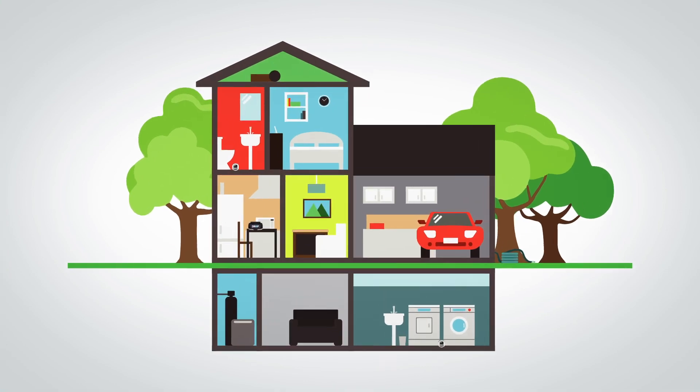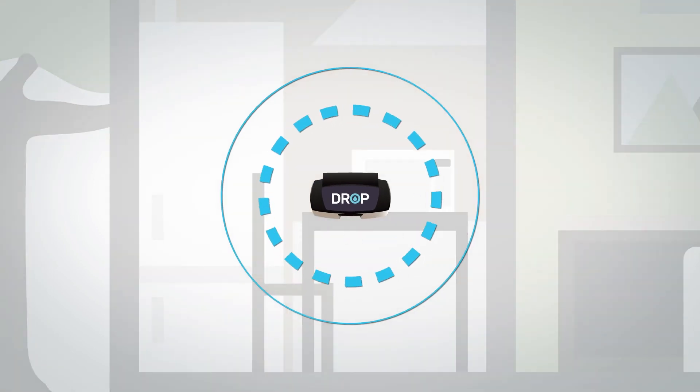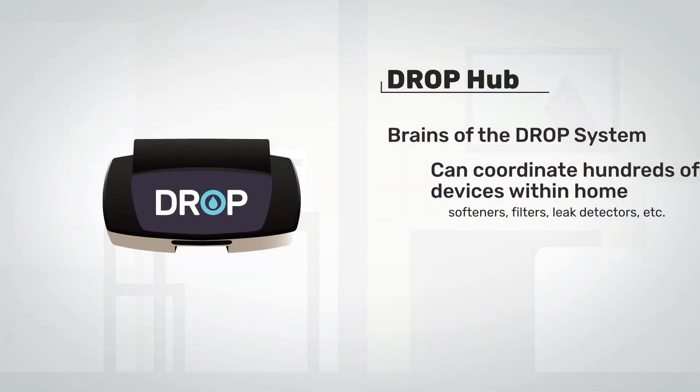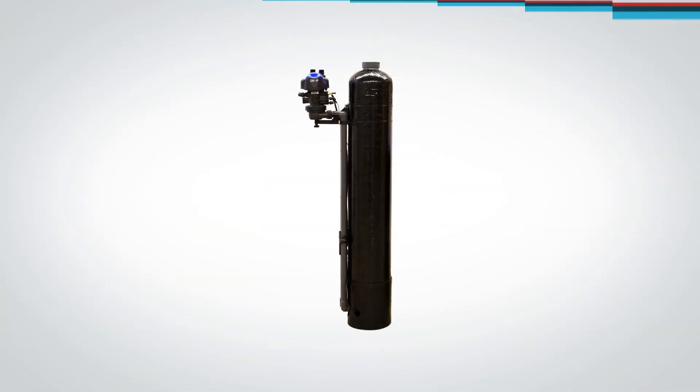When you buy a DROP aeration filter, you're installing a product in your home that's part of an ever-expanding ecosystem of water management products designed to work together in harmony. All DROP products are controlled by the DROP hub, which is the brains of the system and can coordinate hundreds of devices within the home while also connecting your system to the cloud for remote access.